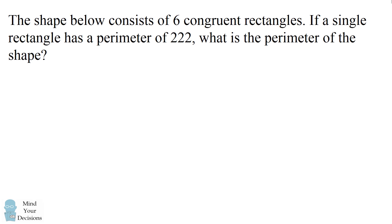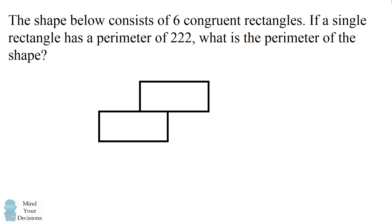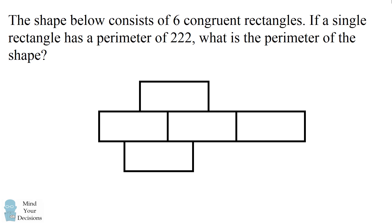Hey, this is Presh Talwalkar. The shape below consists of six congruent rectangles. If a single rectangle has a perimeter of 222, what is the perimeter of the shape? That is, what is the perimeter of the shape highlighted in blue? Can you figure it out? Give this problem a try, and when you're ready, keep watching the video for the solution.